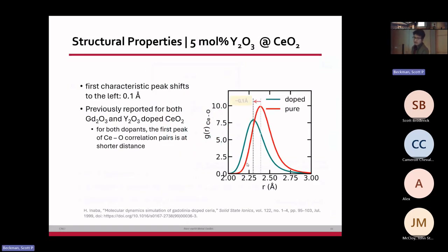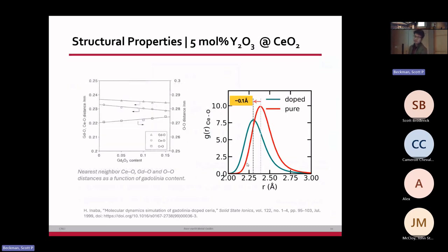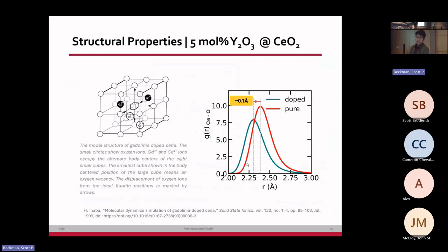And this 0.1 angstrom shift is due to the oxygen vacant sites being occupied by oxygens along the 100 direction. The change of the interaction distance for ceria and oxygen in doped systems has been seen in prior publications. In this figure, as you can see, in the middle oxygen sites, the oxygen along the 100 direction would try to fill up, and this decreases the distance of ceria and oxygen.